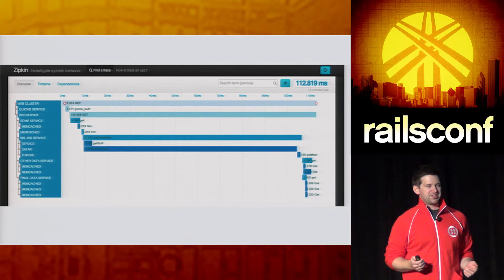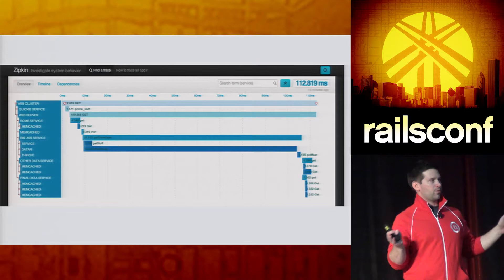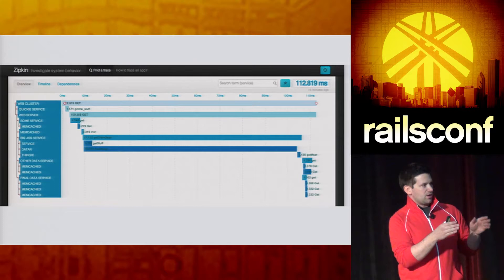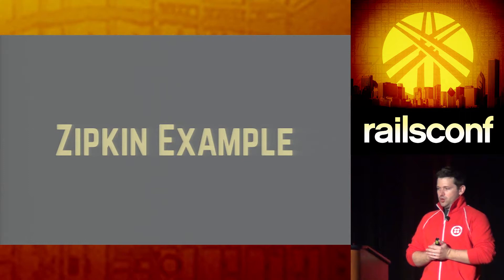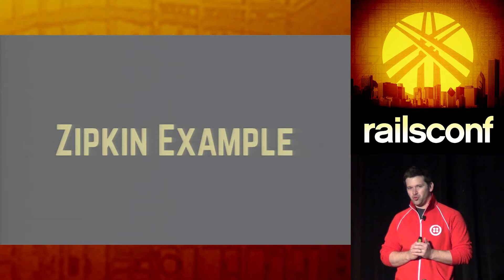Zipkin's interface is pretty simple. You can see here the profiling view of a request at the top — that's the entire request — and then each service that ends up getting called has its own entry where you can look at each individual point throughout the tracing architecture. I want to go through an example of instrumenting a Rails application using Zipkin. It's actually incredibly easy.